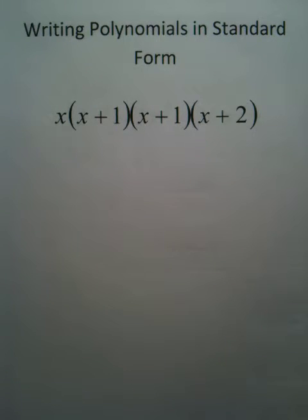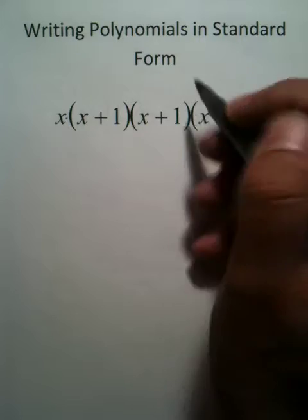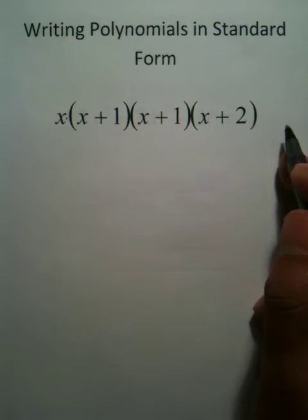Writing polynomials in standard form is actually a pretty straightforward process. It's only multiplication, and that makes sense because it says x times times times. You've got all this business multiplied by each other.